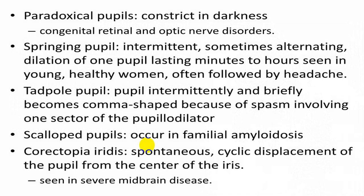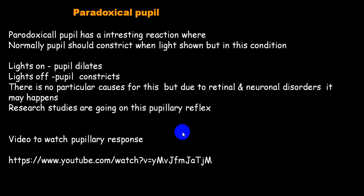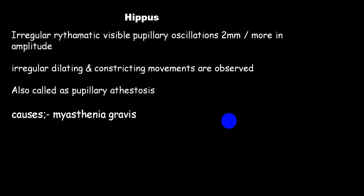The paradoxical pupil: normally the pupil should constrict when the light is shown; instead, if the pupil dilates, it is called a paradoxical pupil (and constricts when light is off). This is very rare and can occasionally be seen in normal persons. Hippus pupil: irregular dilating and constricting movements are observed, and this can happen in myasthenia gravis.